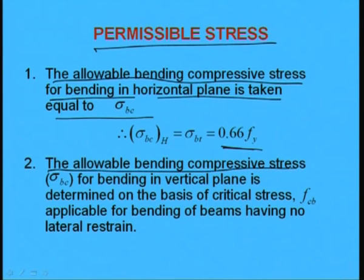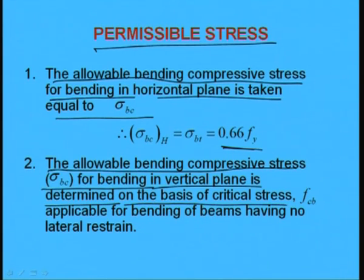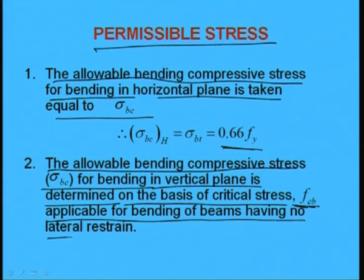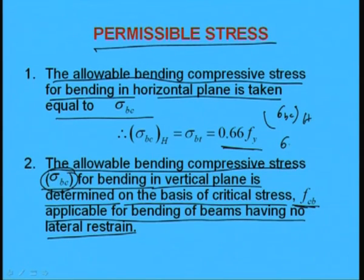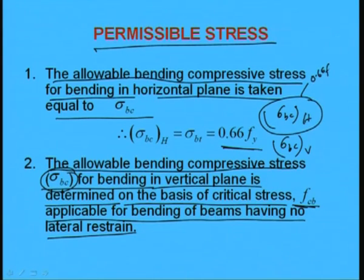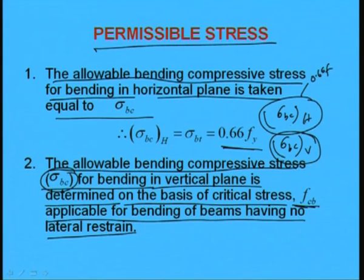The allowable bending compressive stress for bending in the vertical plane is determined on the basis of the critical stress fcb, applicable for bending of beams having no lateral resistance. So σbc_horizontal can be taken as 0.66 fy, but for the vertical load the permissible bending stress in compression must be calculated through the formula shown in earlier lectures.